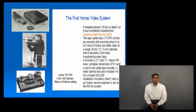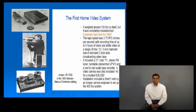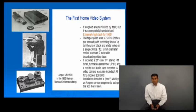If you look at the first home video system — this is from a quick Google search — it was extremely high tech for 1963, but the cost was $30,000. If you look at the device the person is carrying, you'll realize it's just not conducive for shooting home videos. It included a colored TV, a tuner, a turntable, and so forth.